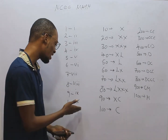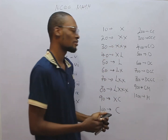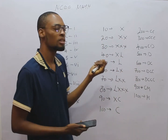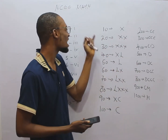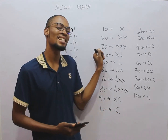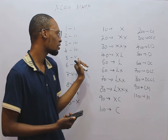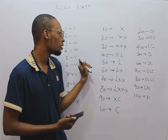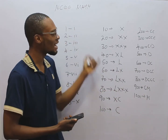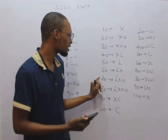10 is X and 9 is IX, so 19 is XIX. 20 is XX, so 21 will simply be XXI, and 22 is XXII — you just simply combine them. 30 is XXX, so 35 will simply be XXXV. 40 is XL, so 42 will be XLII. 50 is L.